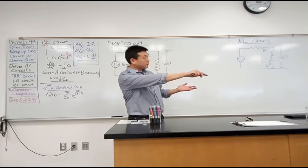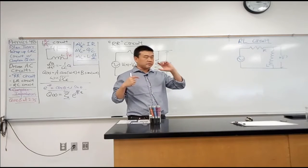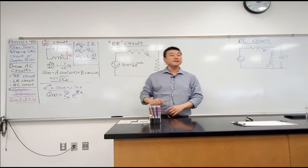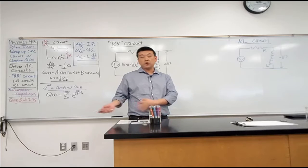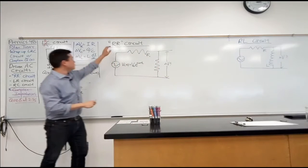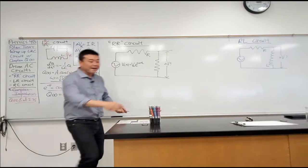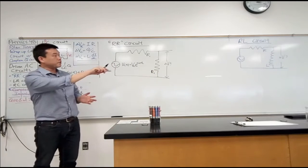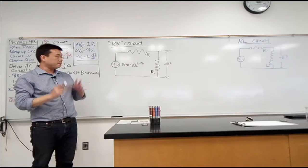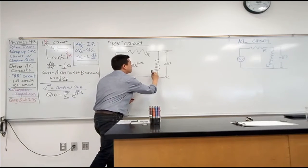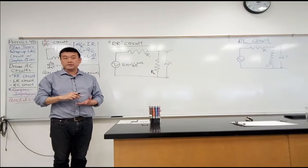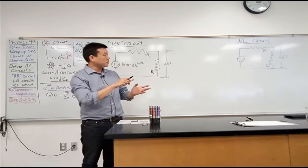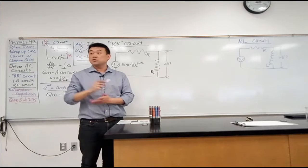I will work this out using calculus, and then you will see that with a certain identification of a particular concept that we would call complex impedance, what used to be a calculus problem turns back into an algebra problem. So let me do this RR circuit — the resistor-resistor circuit — so that you see the method we are going to apply throughout all three problems, and then I'll get a particular result that we can point to and use to come up with an idea that will allow us to solve these questions using nothing but algebra.